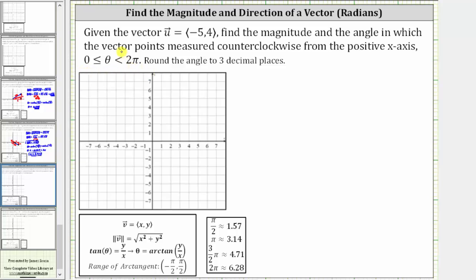Let's begin by sketching the vector in standard position, which means the initial point is at the origin. From here, because the x component is negative five, we move left five units. Because the y component is positive four, we move up four units. This is the location of the terminal point of vector u in standard position.